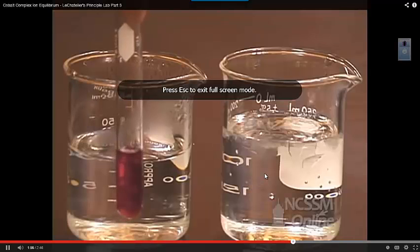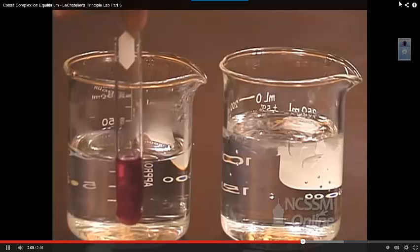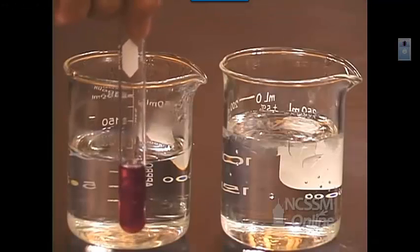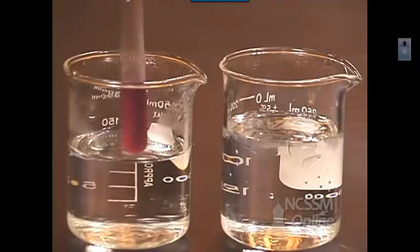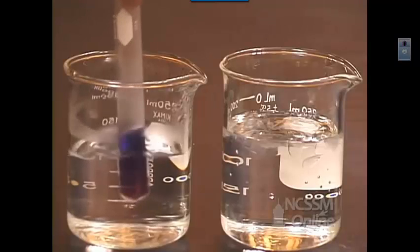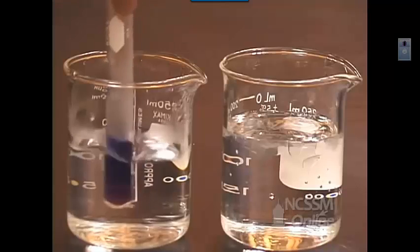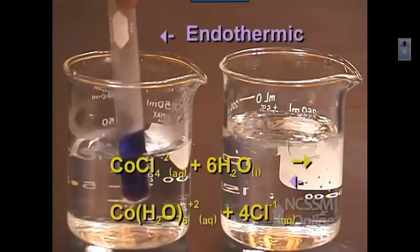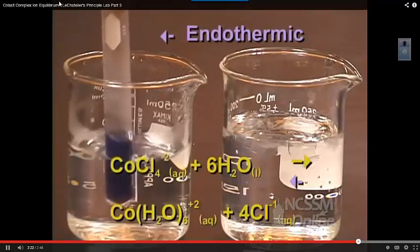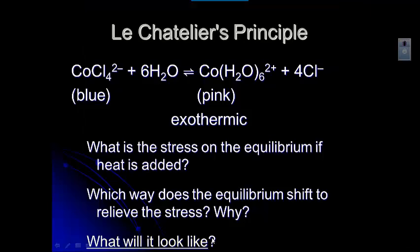Taking a test tube containing the equilibrium mixture — the solution is pink, indicating a high concentration of the cobalt water complex ion — we put it into a warm water bath. As we warm the solution, it turns from pink to blue. If you heat an equilibrium mixture, the equilibrium will shift in the endothermic direction. This is an indication that this reaction is endothermic in the reverse direction. If it's exothermic in one direction, it's endothermic in the other, because both the forward and reverse reactions are going at the same time.